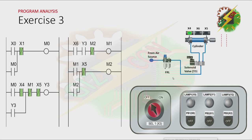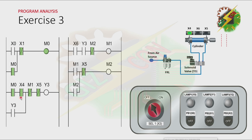This will be my answer to this problem. Let's press PB1. By pressing PB1, M0 will be energized. And because there is a latching here, M0 will not turn off even if X0 is not energized anymore. And because M0 is energized and the cylinder is at fully retracted position, Y3 will turn on. That will cause the cylinder to extend.